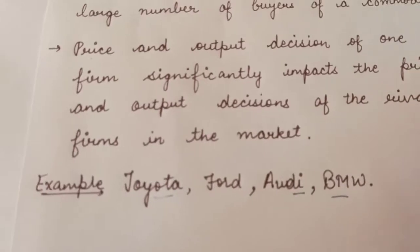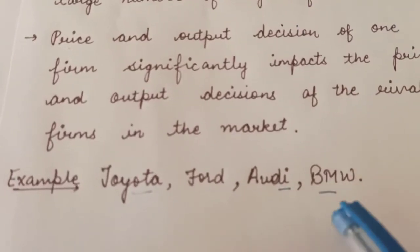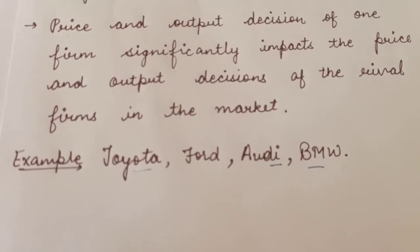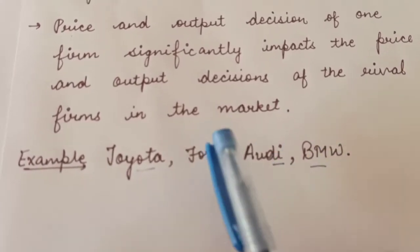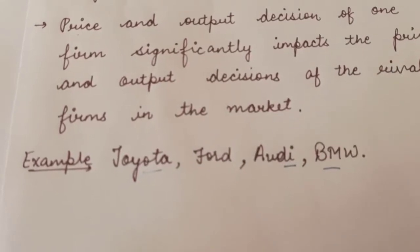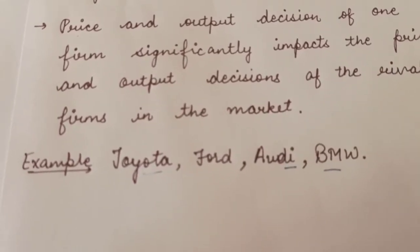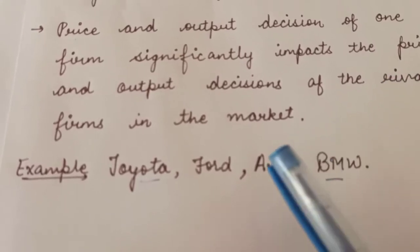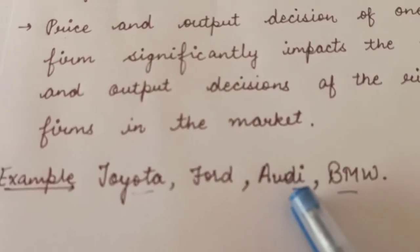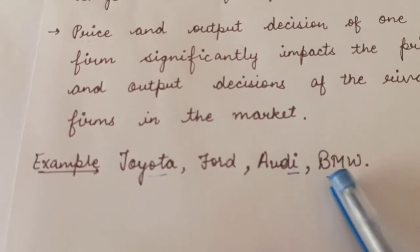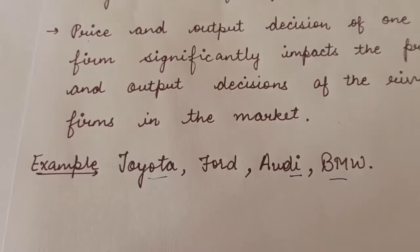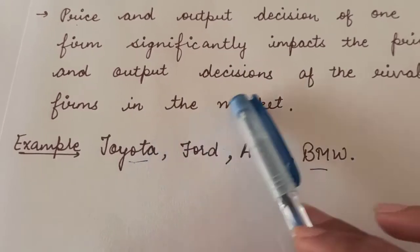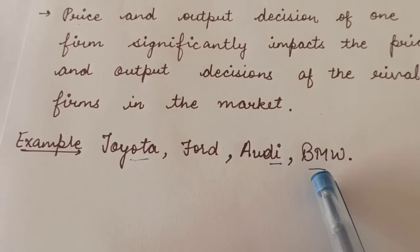For example, let us take the example of Toyota, Ford, Audi, and BMW — these are important branded firms of the auto market. Suppose the price and output of Toyota changes. Then it will automatically affect the price and output decisions of Audi and BMW. So we can say that in such a market, the decision of one firm will impact the decisions of other firms.